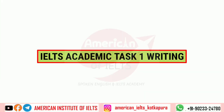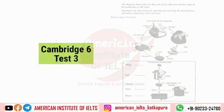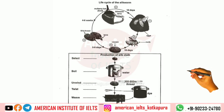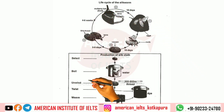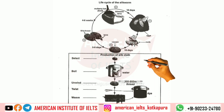Hi guys, Praveen Khanna is back and today I am going to solve Task 1 from Cambridge 6 Test 3, which is basically the life cycle of silkworm and the production of silk clothes. This task is a combination of a life cycle as well as a process, and I am going to explain this task in a very simple way so that you could also score very good bands.